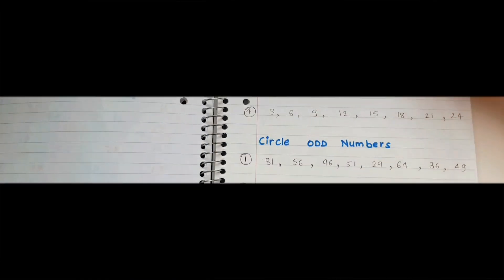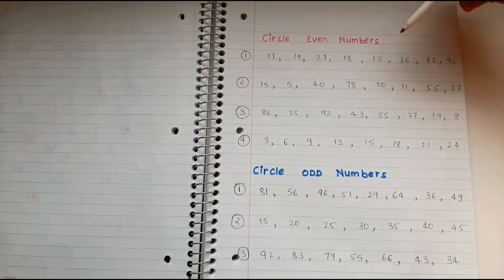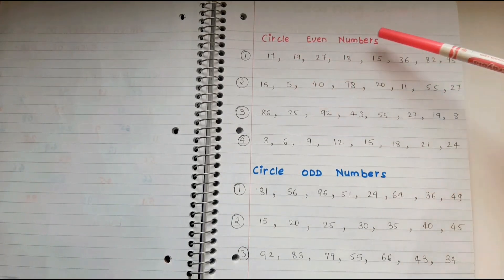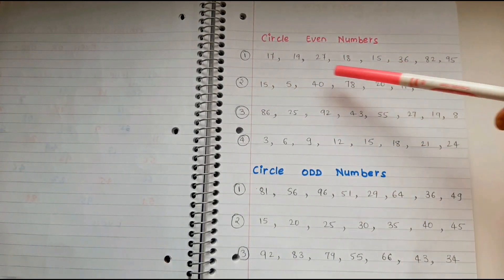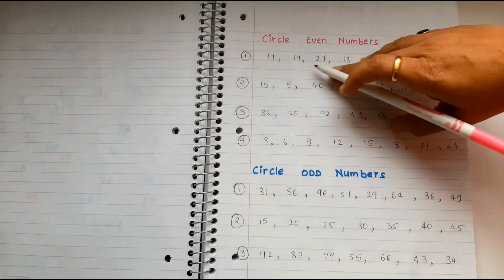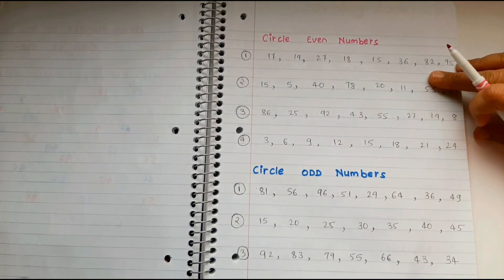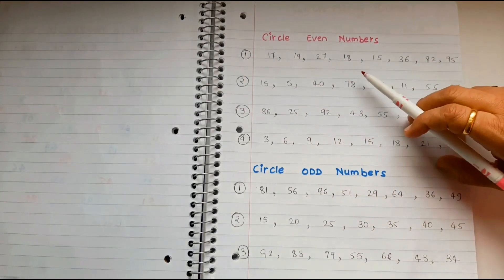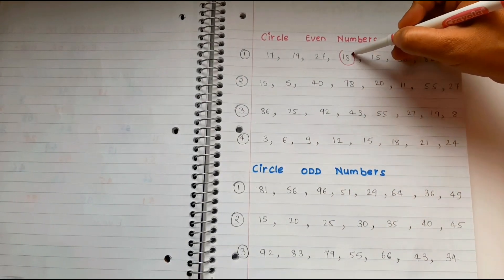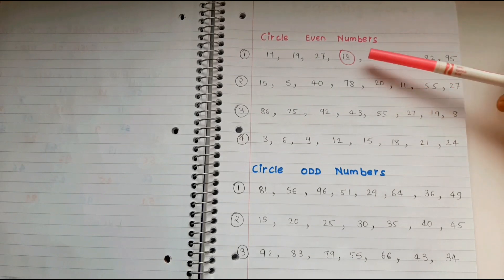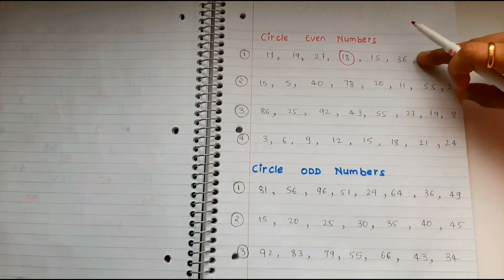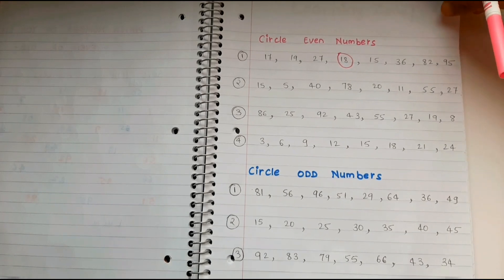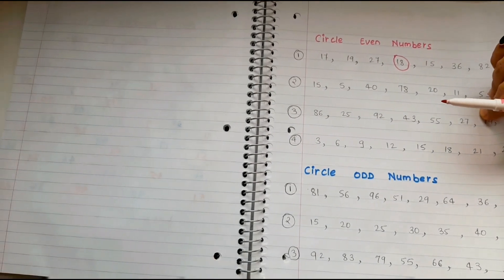Next is another way of designing an even and odd worksheet. I've given some sets of numbers and she has to circle the even numbers. For example: 17, 19, 27, 18 — 18 is an even number, so she needs to circle it. Likewise she circles even numbers and circles odd numbers in their respective sections.